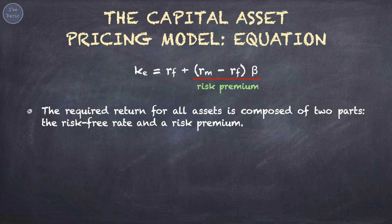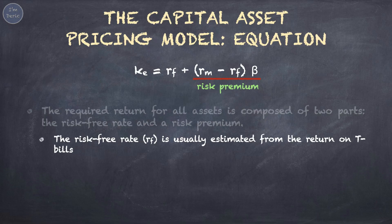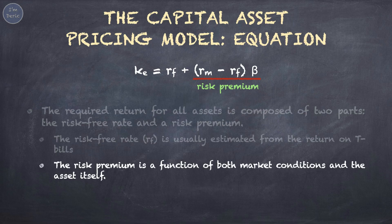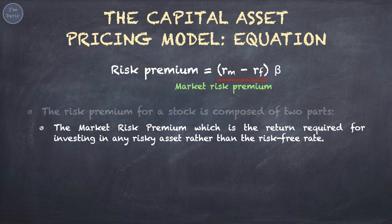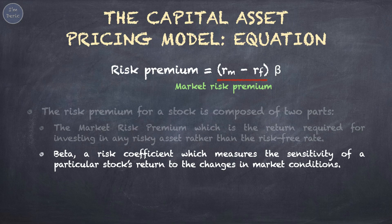The required return for all assets is composed of two parts. The risk-free rate, RF, is usually estimated from the return on T-bills. The risk premium is a function of both market conditions and the asset itself. The risk premium for a stock is composed of two parts: the market risk premium, which is the return required for investing in any risky asset rather than the risk-free rate; and beta, a risk coefficient which measures the sensitivity of a particular stock's return to changes in market conditions.